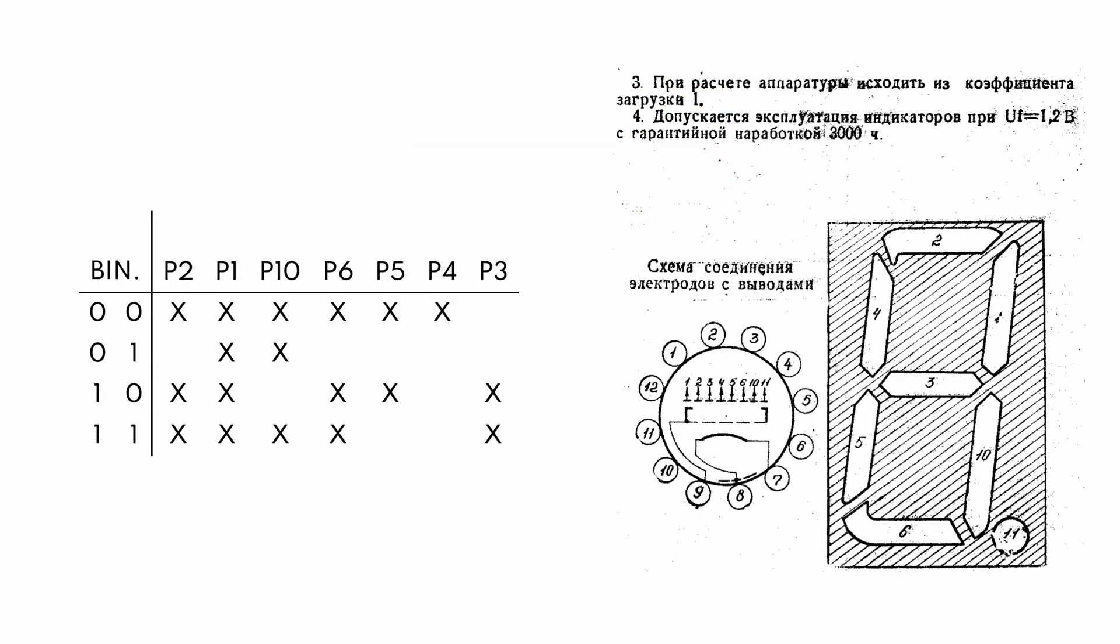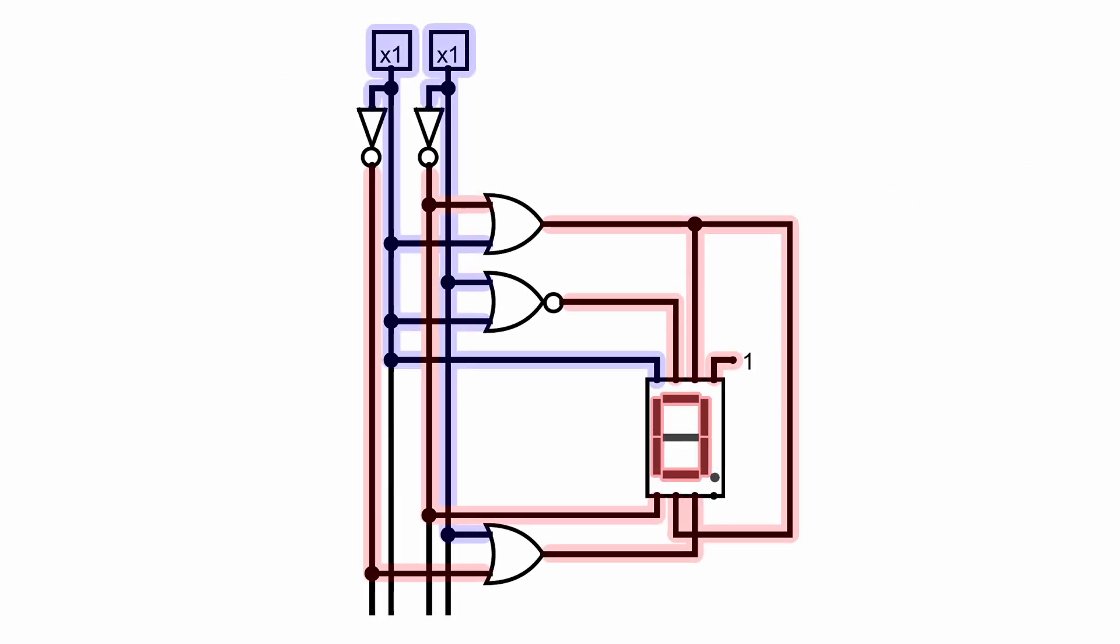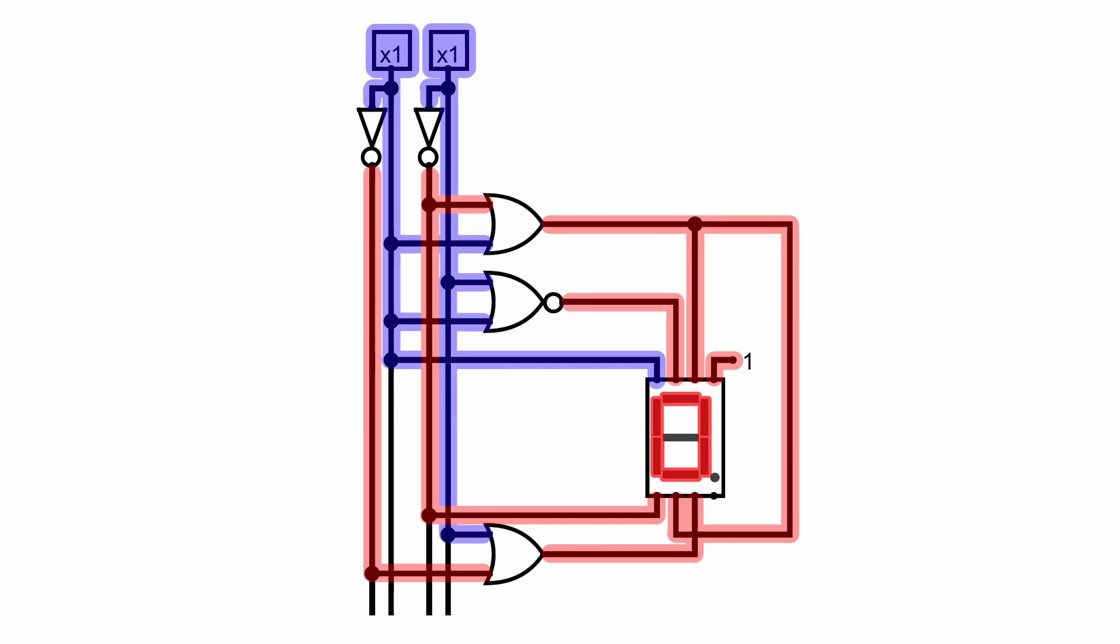So I started by charting out which segments of our seven-segment display would be illuminated based upon the incoming binary. And so you can see, for example, 0, 0 would illuminate segments A, B, C, D, E, and F, or binary 1, 1 would illuminate segment A, B, C, D, and G. And so based off of this table, I started coming up with a logic diagram to essentially get that done. And it looks really simple here, but actualizing this required a little more effort.